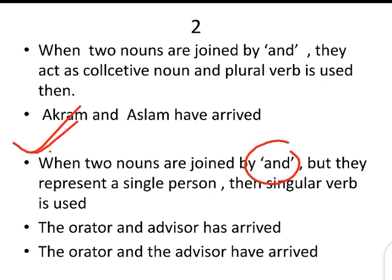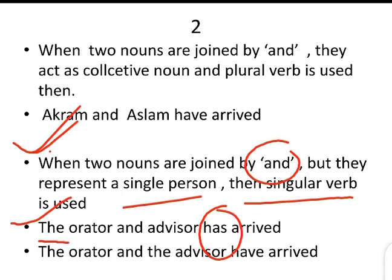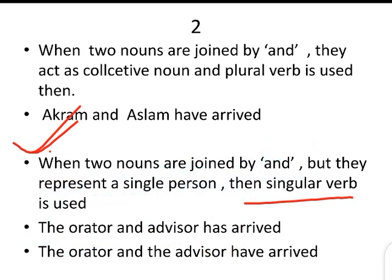However, when two nouns are joined by 'and' but they represent a single person, a singular verb will be used. If they are representing the same single person, then the verb will be singular. But if the two nouns represent two separate entities, then a plural verb will be used.